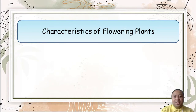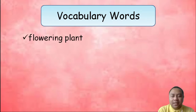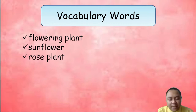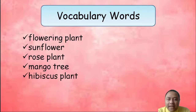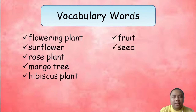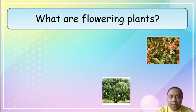Hello students, this is your science teacher, Teacher D. In this video our topic is all about characteristics of flowering plants. Vocabulary words — please repeat after me: flowering plant, sunflower, rose plant, mango tree, hibiscus plant, fruit, seed, flower. So what can you see in the picture?